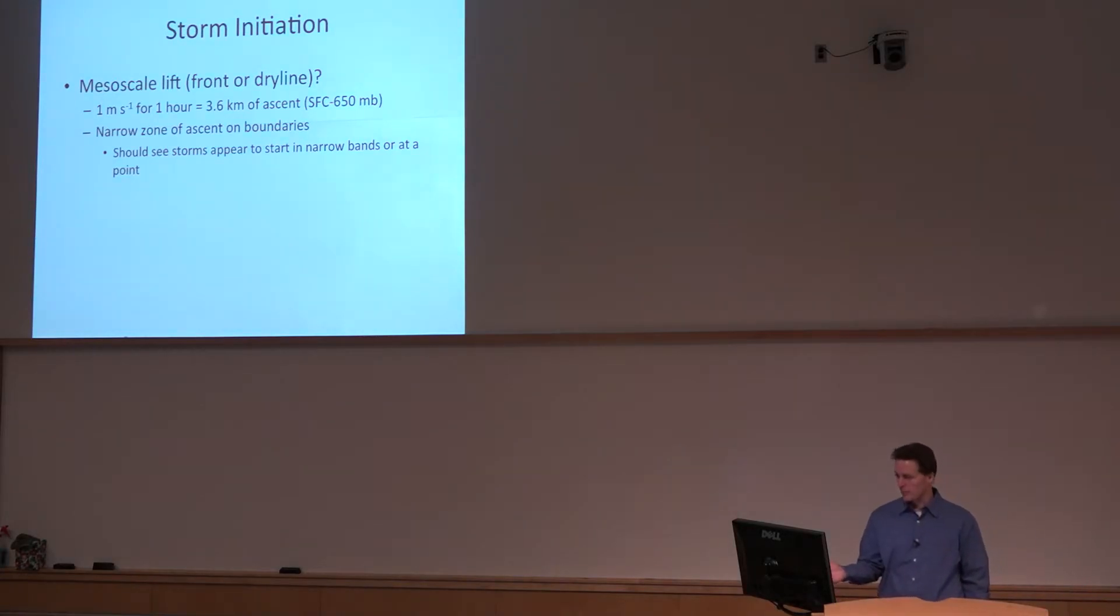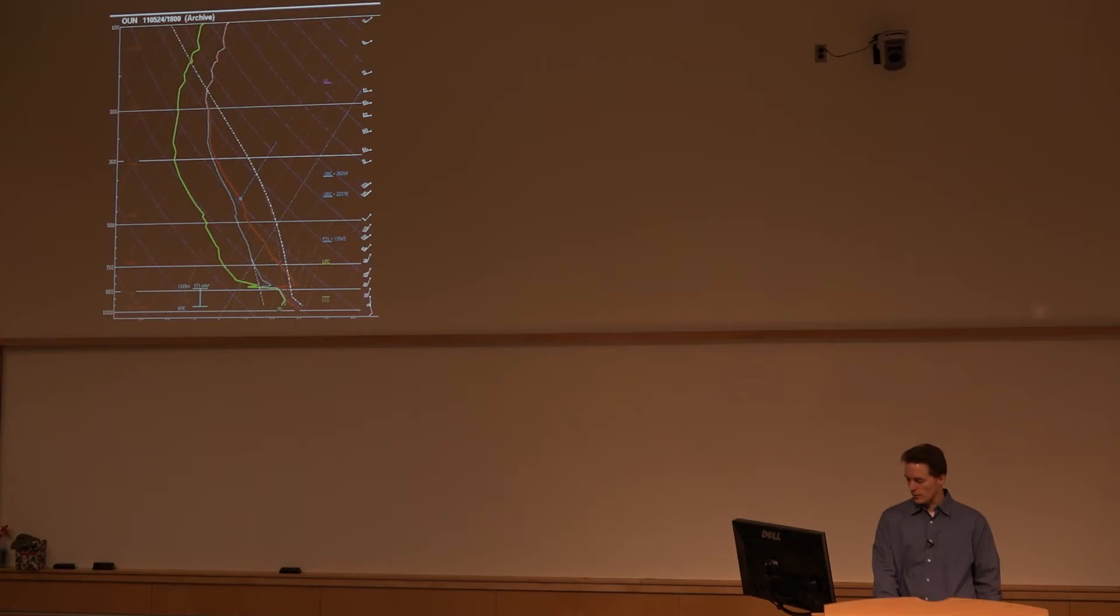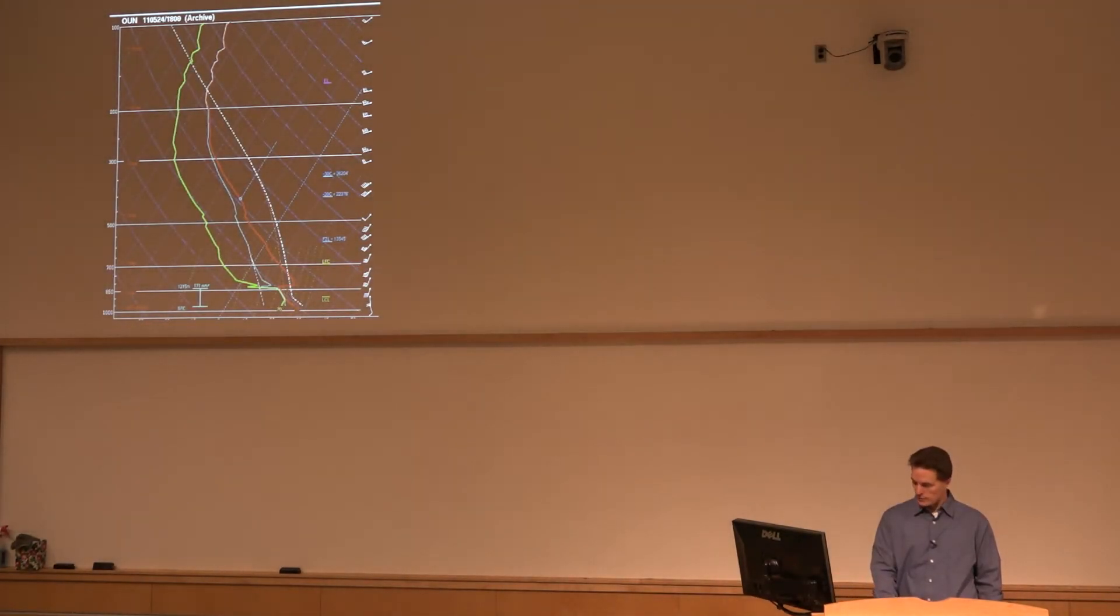If you recall, we mentioned something on order of a meter per second for an hour or so gives you about three and a half kilometers of vertical displacement. Now these zones are narrow and storms should start as points or little bands if that's what's driving it. So if we take this sounding, let's apply a conceptual model here. This is what would have happened if you had one hour of one meter per second ascent on that sounding.